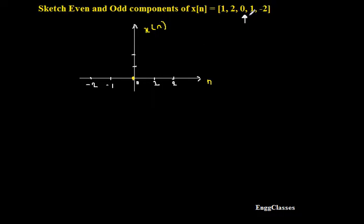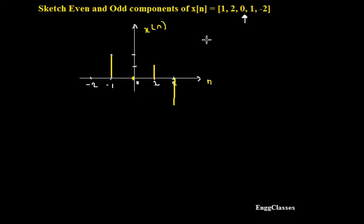At n equal to 1 its amplitude is 1, so I sketch that. Next at position 2 its amplitude will be minus 2. To the left, at position minus 1 its amplitude is 2. At position minus 2 its amplitude is plus 1. So the amplitudes are: 2 at minus 1, 1 at minus 2, 1 at 1, and minus 2 at position 2.